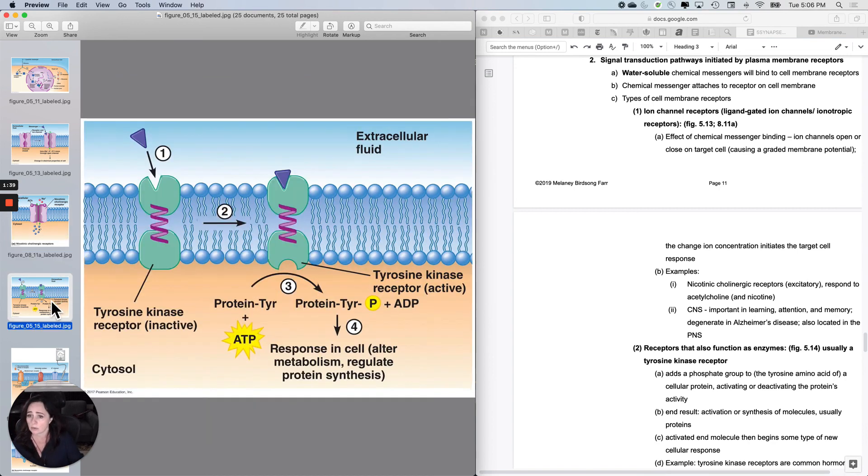Okay, the next category is a cell membrane receptor still, but instead of this one functioning as an ion channel, it functions as an enzyme.